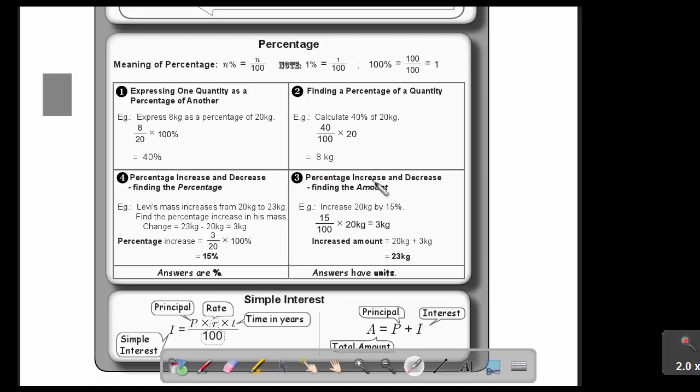Then method 3 was the percentage increase and decrease and finding the amount. So if I say increase 20 by 15%, so if I first work out 15%, 15 over 100, this is why it's under number 2, because I use this finding a percentage of a quantity. So 15 over 100 times 20, and that's 3 kg. So if I increase the amount, then it's the 20 plus the 3, and that will give me an amount of 23 kg. Now, if I want to put this sum into reverse, I will say if his mass increased from 20 to 23, find the percentage increase in his mass. So I will first find the difference or the change, and that's 3, and I will take that 3 and put it over the first amount, the original one, and then I times with 100. So 3 over 20 times 100, and that's 15%.